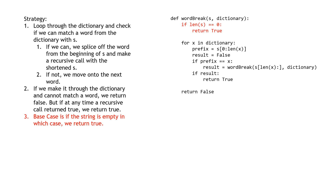Let's take a look at the real code compared to the outline. Here's the base case — we check if the string is empty by checking if the length is zero, and return true. Here's the for loop that goes through every element in the dictionary. I've made a prefix variable used to compare to X, the word in our dictionary, using Python's slicing notation to get the first len(X) letters of S. We have a result variable for the recursive call. In the if statement, we compare the prefix to X, and if equal, make a recursive call with the spliced-off S and same dictionary. If that result is true, we return true. Finally, if we reach the end of the dictionary without success, we return false.